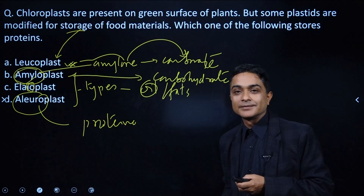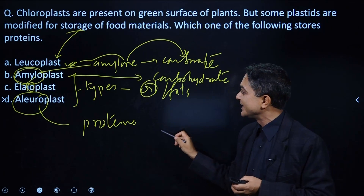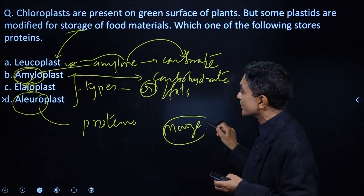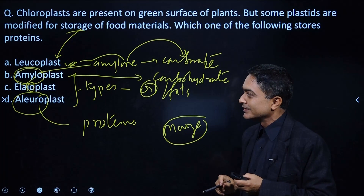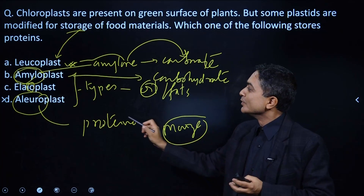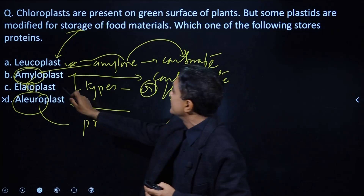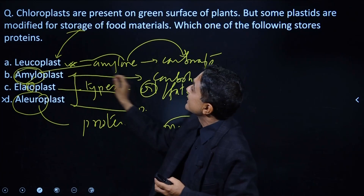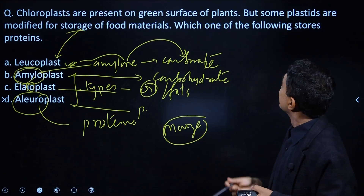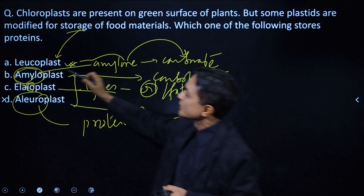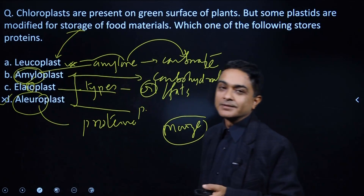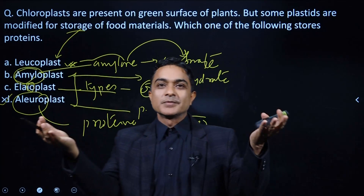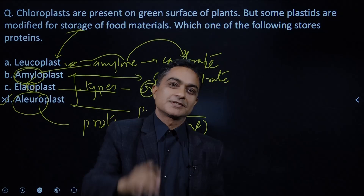Aleuroplasts are the plastids that store protein. So aleuroplasts are the answer — they form in aleurone and store protein. Thank you very much.